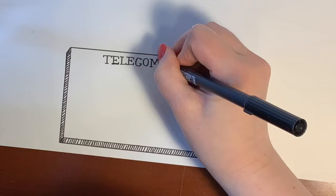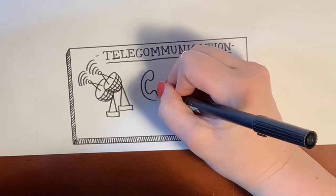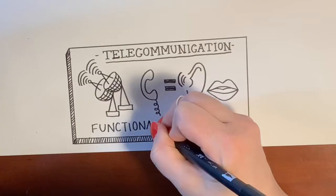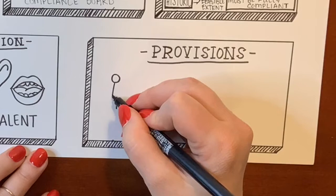Title IV is about telecommunications, which covers telephone, internet, and radio. It requires that all telecommunication companies in the U.S. take steps to ensure functionally equivalent services for consumers with disabilities — specifically people who are deaf, hard of hearing, or have speech impairments. An example of this could be having braille on keyboards or having options to have someone interpret for you over the phone.